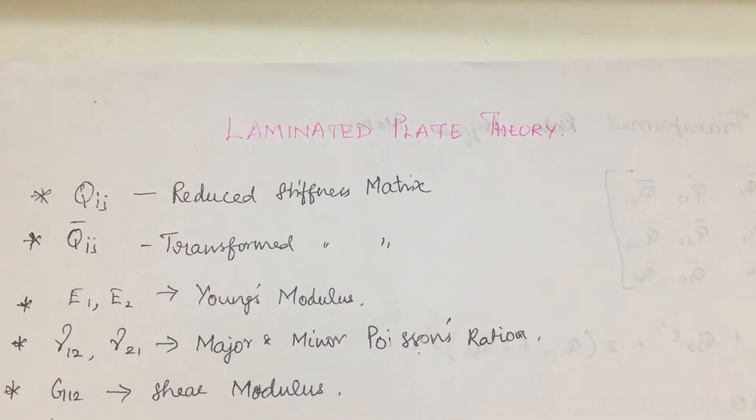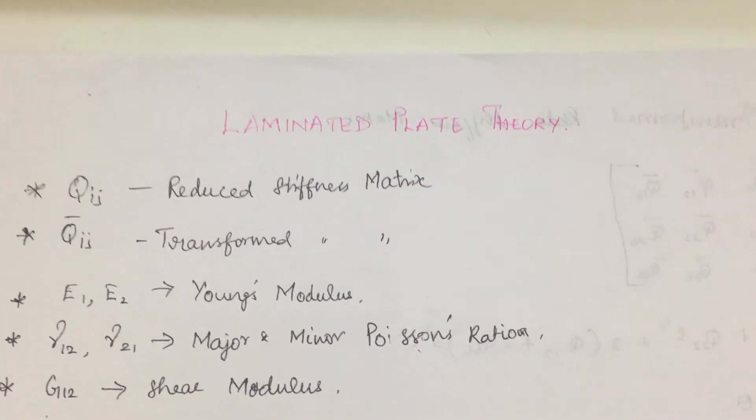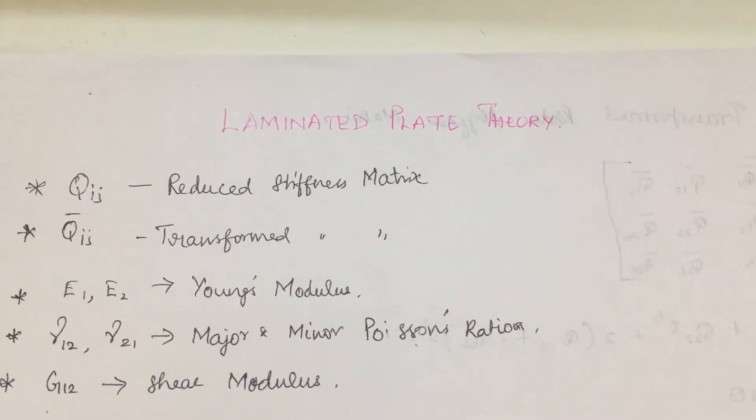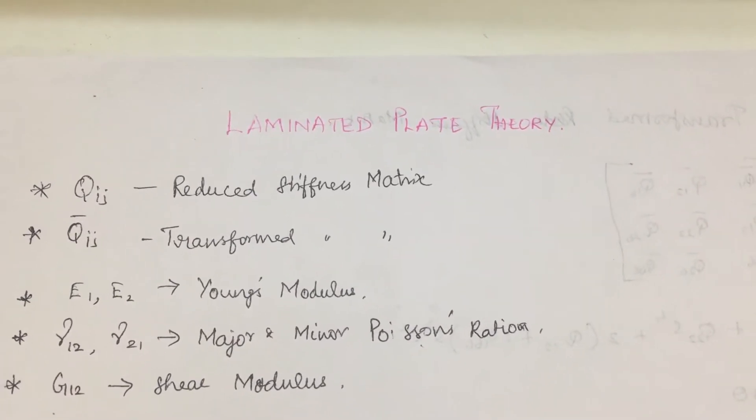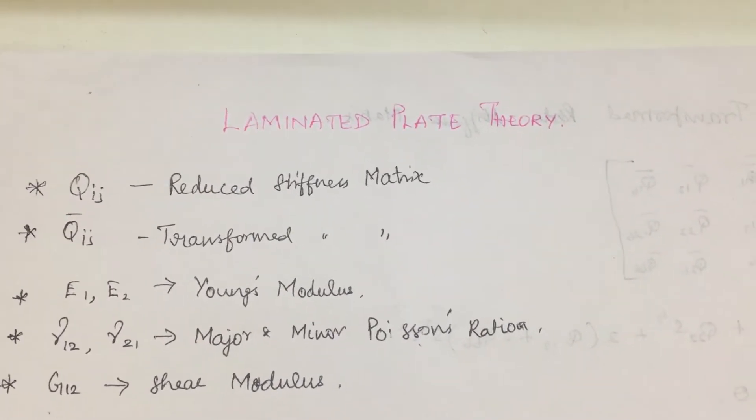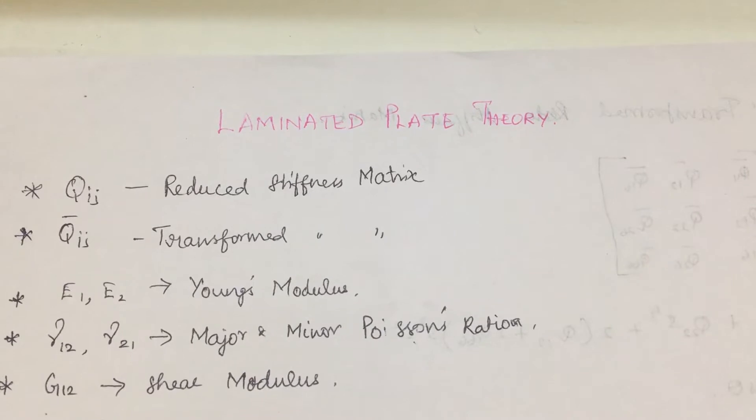Hello everyone, the topic is laminated plate theory. In order to solve laminated plate theory problems, we will be requiring the following formulas. Starting from the first one, qij, which is called the reduced stiffness matrix.